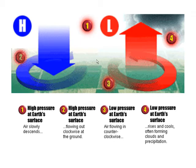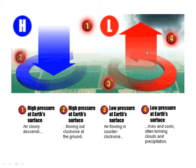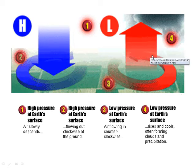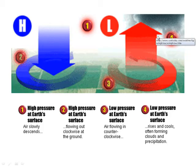To summarize: in a high pressure system, air descends and flows out clockwise around the ground. A low pressure system goes counterclockwise and then upward, and that's what forms the bad weather.